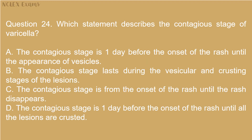Question 24: Which statement describes the contagious stage of varicella? A. The contagious stage begins one day before the onset of the rash until the appearance of vesicles. B. The contagious stage lasts during the vesicular and crusting stages of the lesions. C. The contagious stage is from the onset of the rash until the rash disappears. D. The contagious stage begins one day before the onset of the rash until all the lesions are crusted.